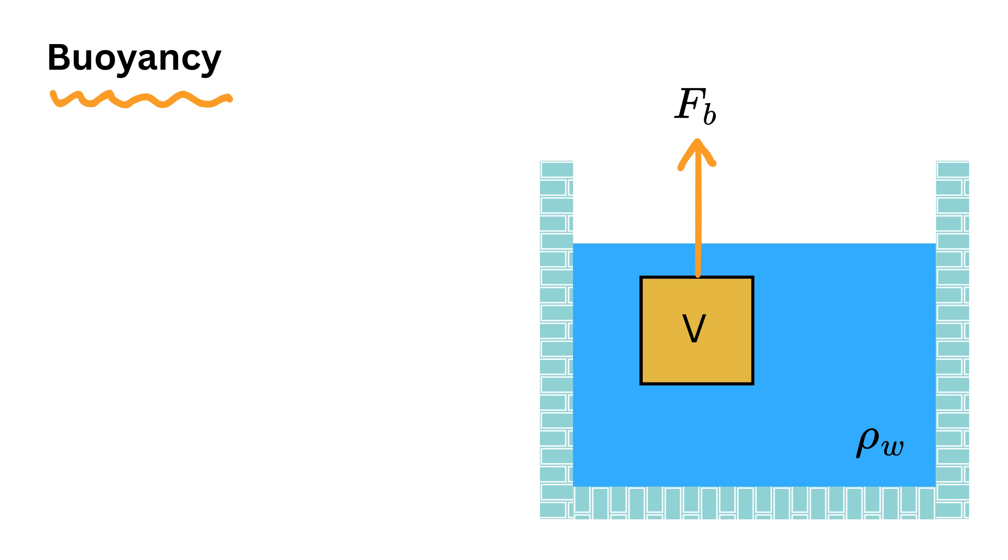So buoyant force Fb is equal to density of the fluid represented by rho sub W multiplied by acceleration due to gravity g multiplied by volume of fluid V displaced by the object.